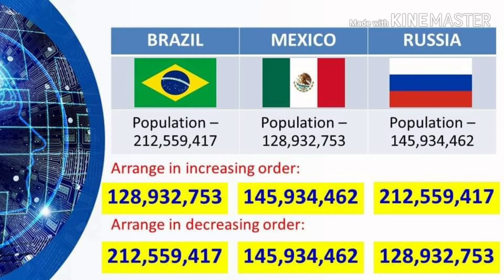After learning how to compare numbers, we can now arrange them in either increasing order or decreasing order. When you say increasing order, you start from the smallest number up to the greatest number. While for decreasing order, you start with the greatest number going to the smallest. Here are the populations of Brazil, Mexico, and Russia. Brazil's population is 212,559,417; Mexico's is 128,932,753; and Russia's is 145,934,462.